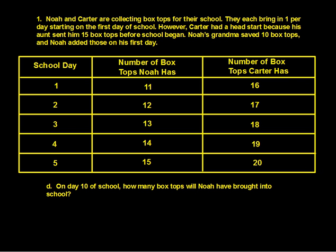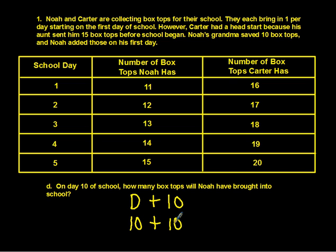Letter D. On day 10 of school, how many box tops will Noah have brought to school? Using the formula D plus 10, we substitute day 10: 10 plus 10, so Noah had a total of 20 box tops.